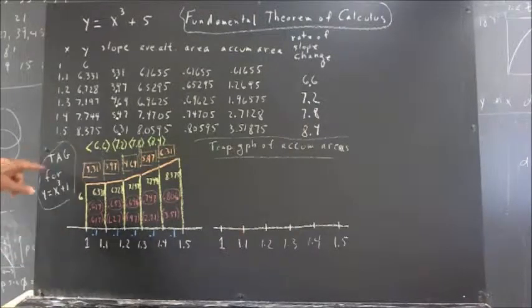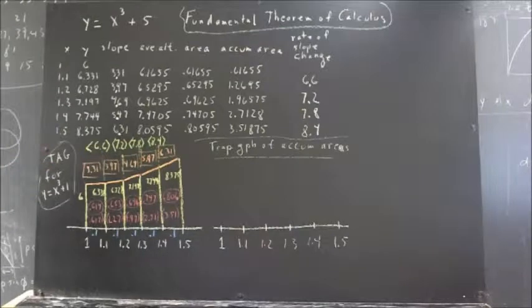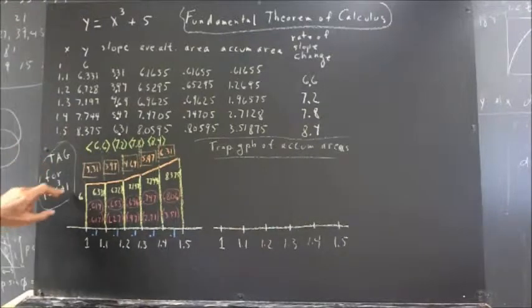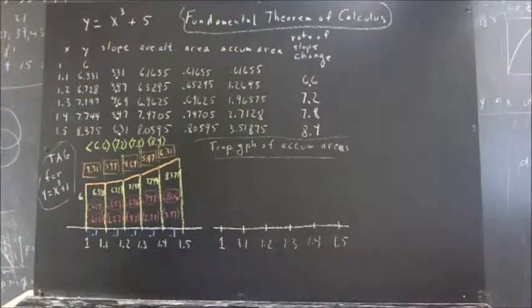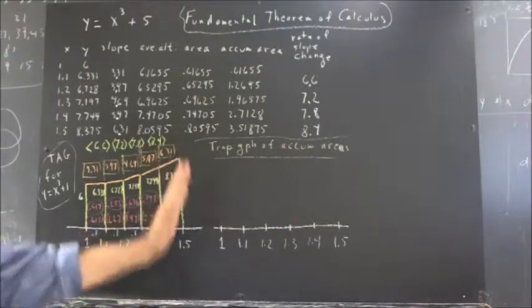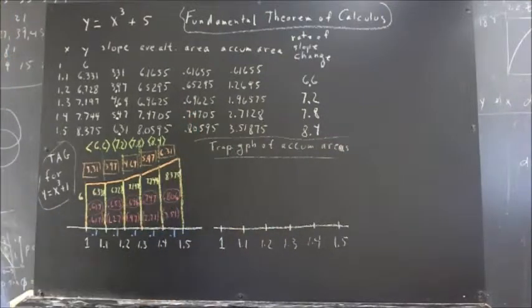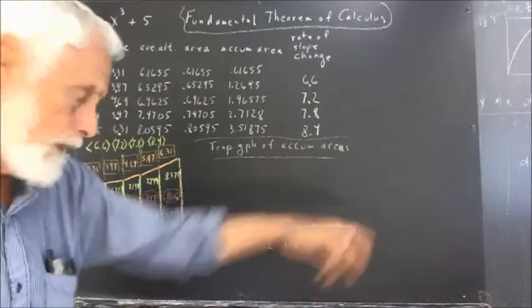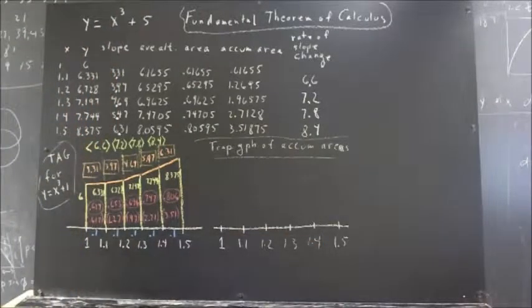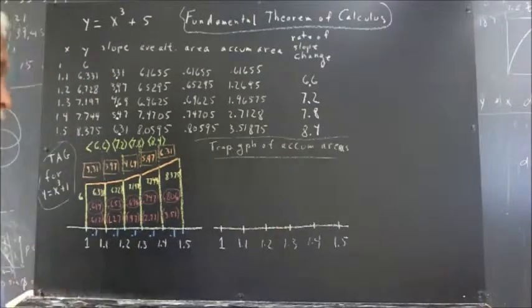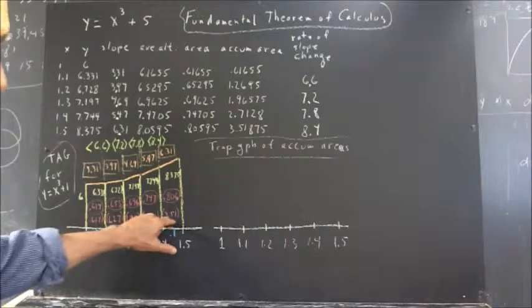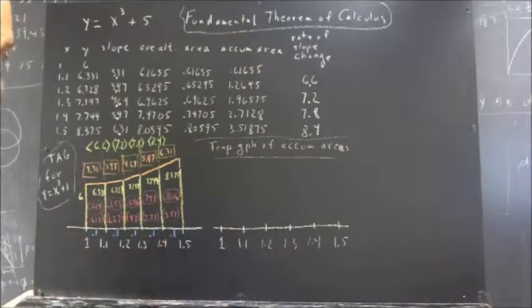Okay, now, what we have here, TAG stands for trapezoidal approximation graph for y equals x cubed plus 1. That's what we have here. Now, we're going to do the trapezoidal graph of the accumulated areas. That is, the altitudes of this graph will be the accumulated areas, and the x values will be identical to the x values here. So, the accumulated area at the end of the first trapezoid is 0.617. So, let's see. We're going to need a scale that goes from 0.617 up to 3.51.